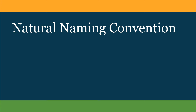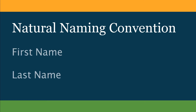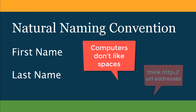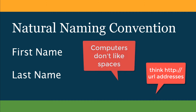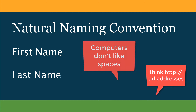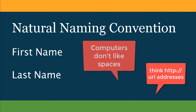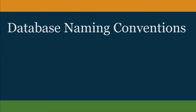The natural thing to do when naming is to do things like first name, last name with a space. The thing is that computers don't like spaces. Think of the HTTP URL address — it doesn't have any spaces. To handle the space issue in names, programmers came up with some conventions. There are three database naming conventions that are commonly used.